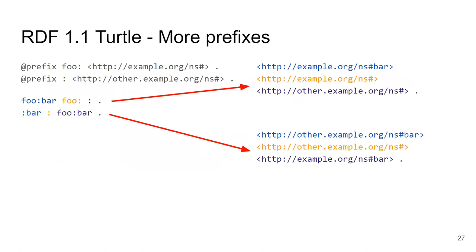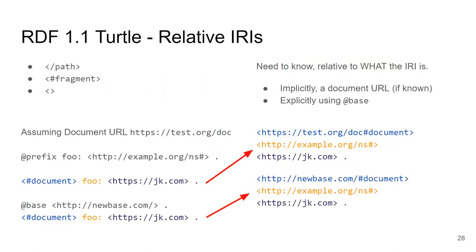Prefixes do not always need a name — you can have an empty-name prefix. When combined with nothing after the colon, it still represents a full IRI. Prefixed URIs do not use angle brackets (< >). In contrast, URIs inside angle brackets are either absolute (starting with a scheme like http) or relative (not starting with a scheme), in which case you need to know the base to resolve the full URI.